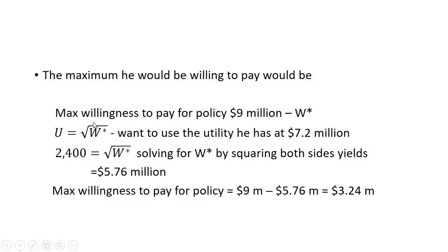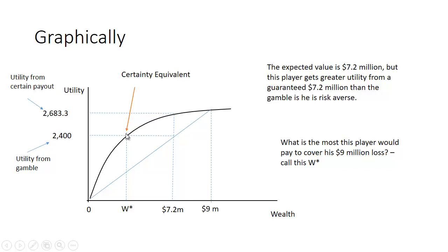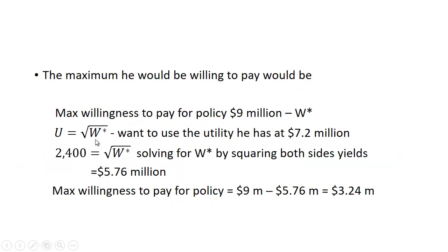His utility equals the square root of W-star, and we know he gets 2,400 units of utility at that level. So we have 2,400 equals the square root of W-star. Squaring both sides and solving, we get W-star equals 5.76 million. Taking the 9 million and subtracting 5.76 million gives us 3.24 million — the maximum he would be willing to pay to cover himself given this utility function and the possibility of loss.